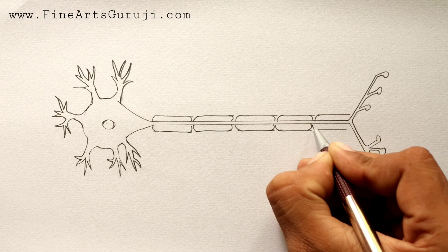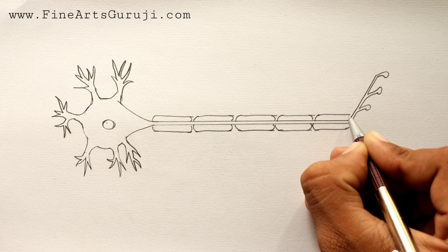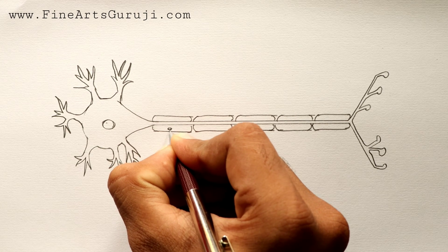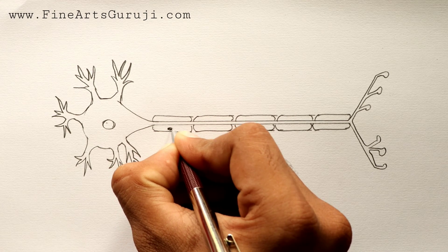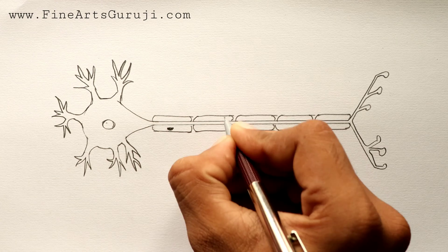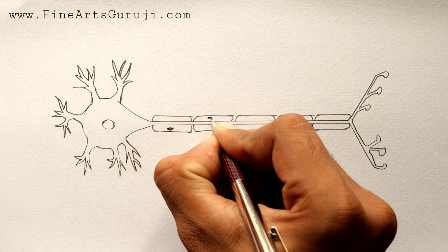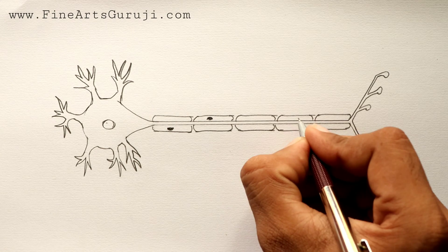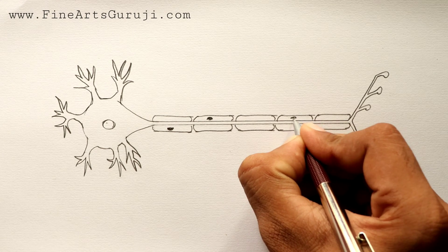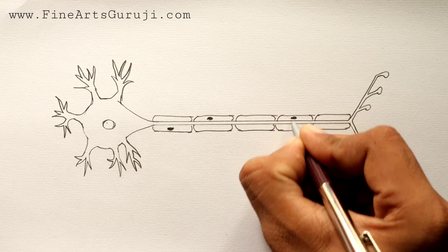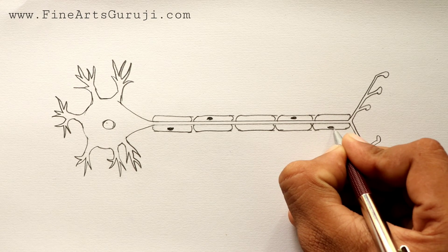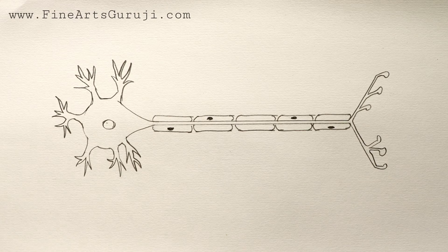After drawing this myelin sheath, we have to draw Schwann cell. We will draw here like this and then we will make it dark. We have to draw same as possible to its upper side. Then we will leave this one and draw from here.